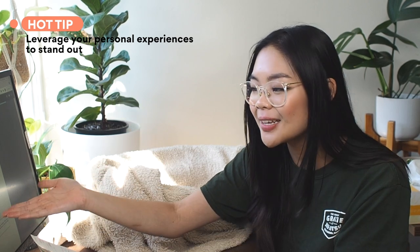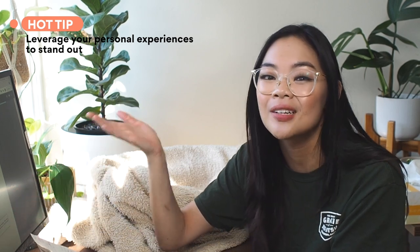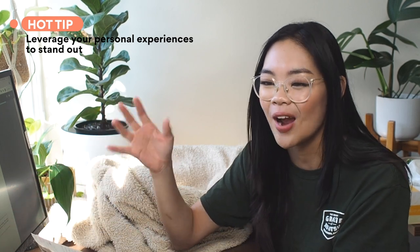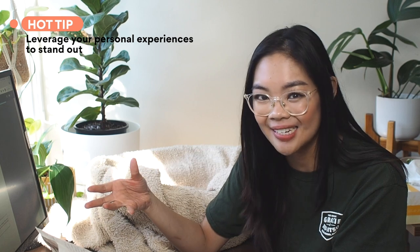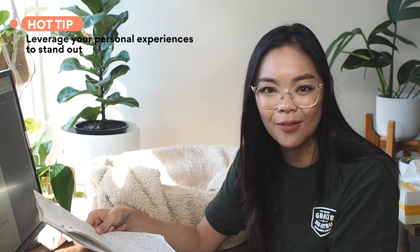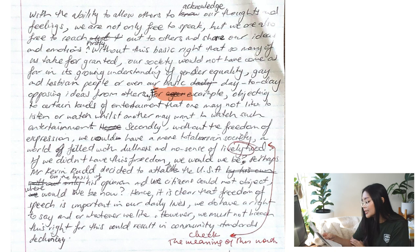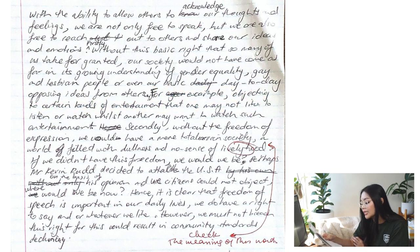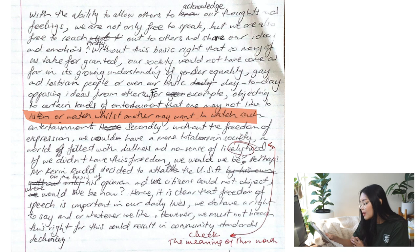There are thousands of people looking at these four statements and writing about the same kind of stuff. The way you can stand out very easily is to include your own examples. For example: 'objecting to certain kinds of entertainment that one may not like or listen to or watch, whilst others may want to watch such entertainment.' That was not my best sentence, but hey — still 10 out of 10.